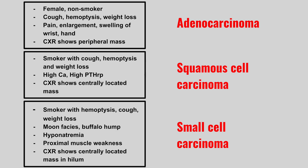Remember, these paraneoplastic syndromes are very high yield. So if you see joint or bone involvement, think of adenocarcinoma. If you see hypercalcemia, associate that with squamous cell carcinoma, the one with the keratin pearls. And then if you have Lambert-Eaton syndrome, SIADH, or Cushing syndrome, associate this one with small cell carcinoma, the one with the small blue cells on pathology.